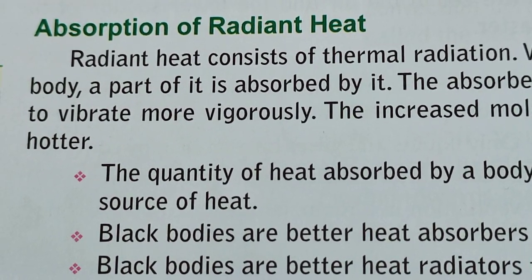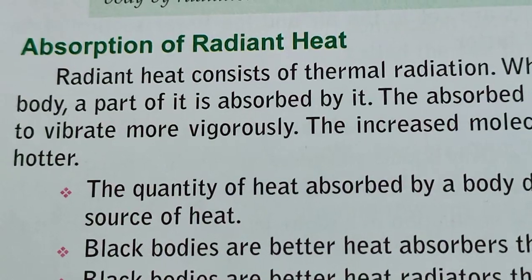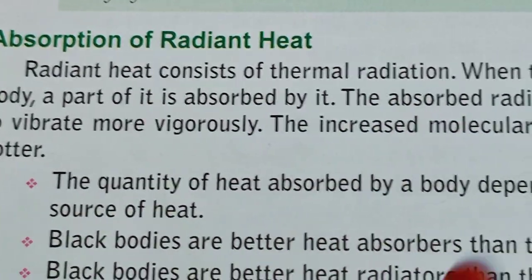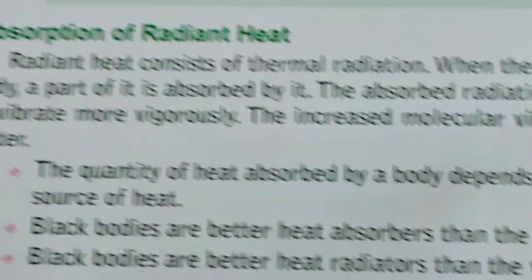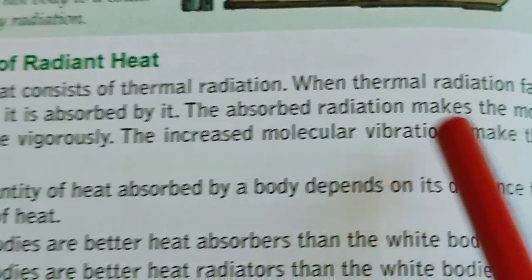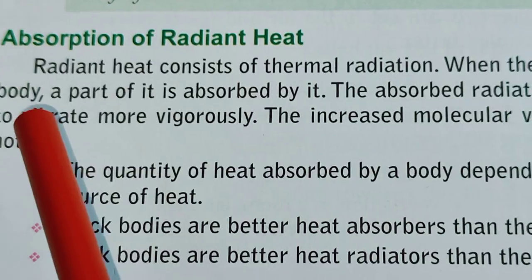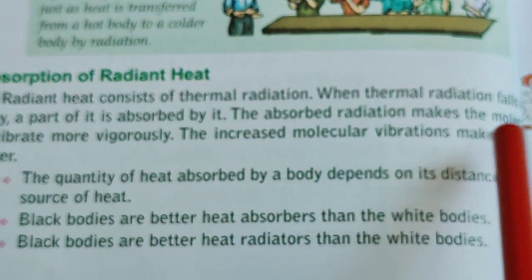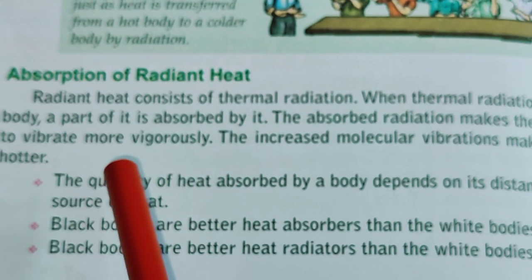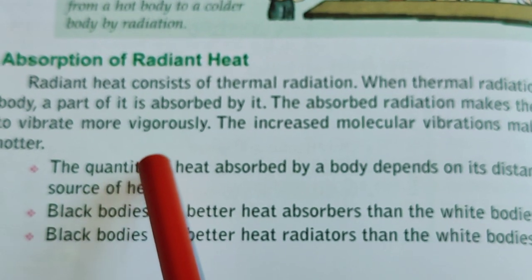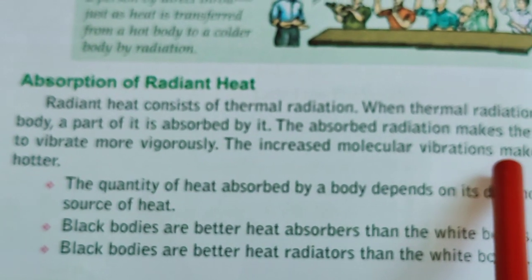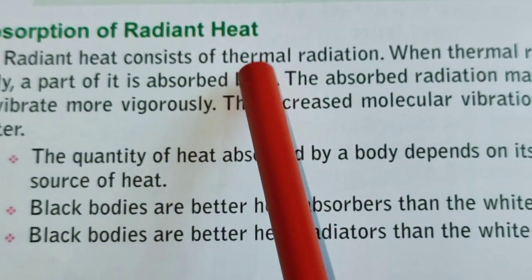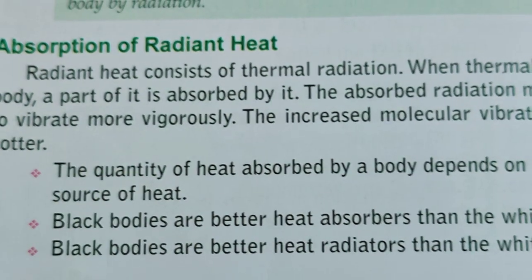Now let's see how radiant heat is absorbed by objects. Radiant heat consists of thermal radiation. When thermal radiation falls on a body, a part of it is absorbed by it. The absorbed radiation causes the molecules of the body to vibrate more vigorously. This increased molecular vibration makes the body hotter — that is how thermal radiation is absorbed by a body.